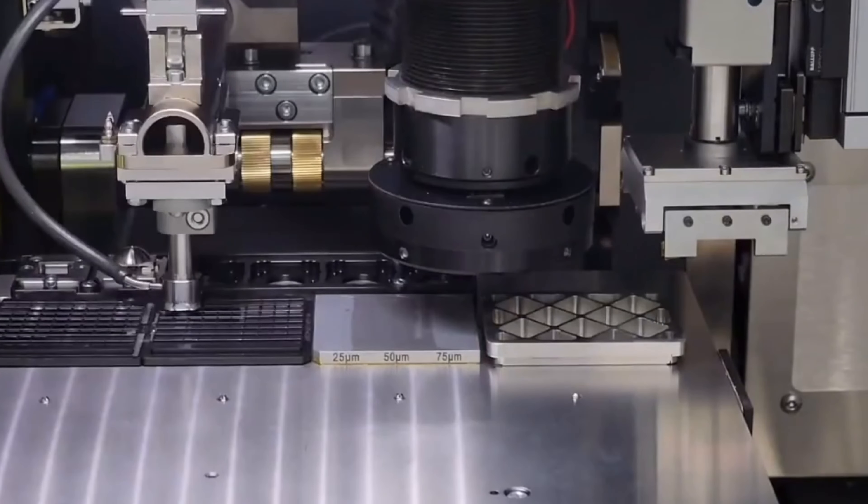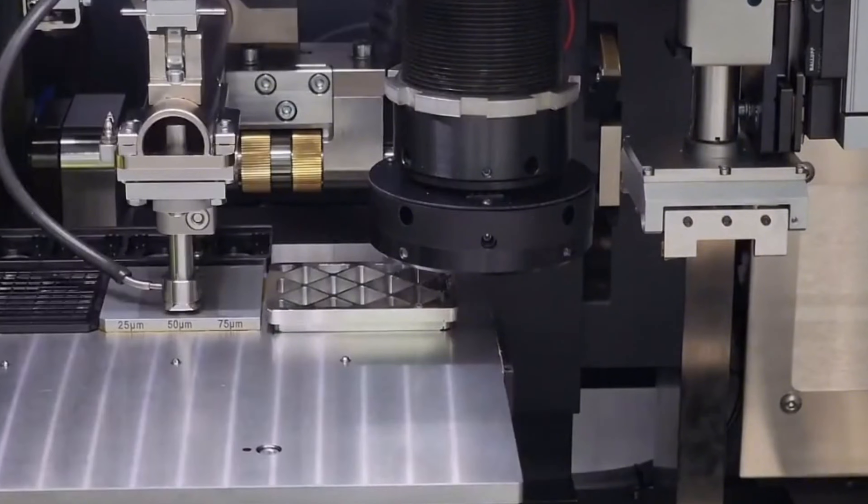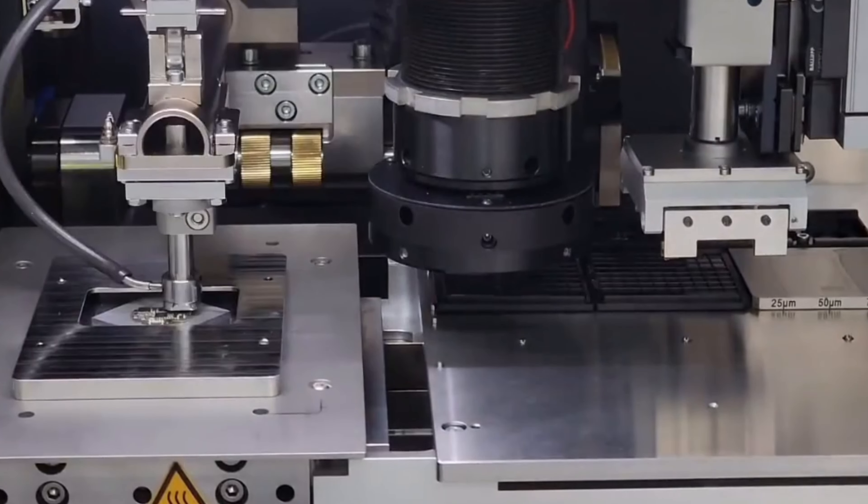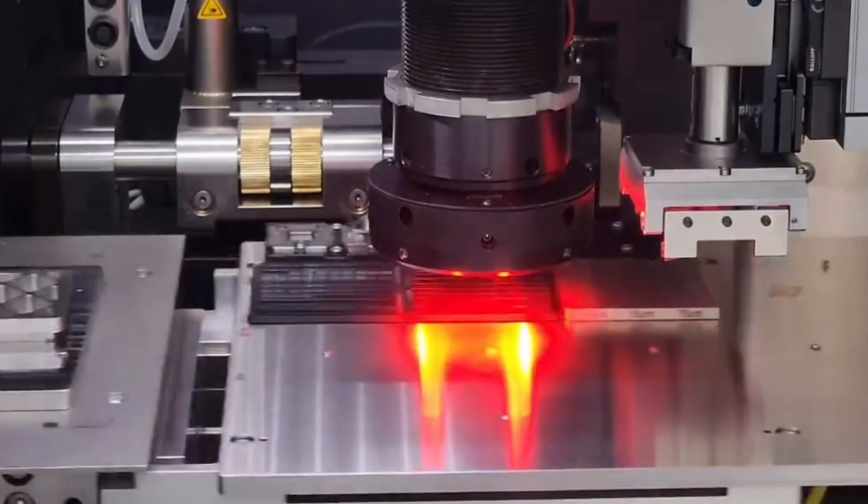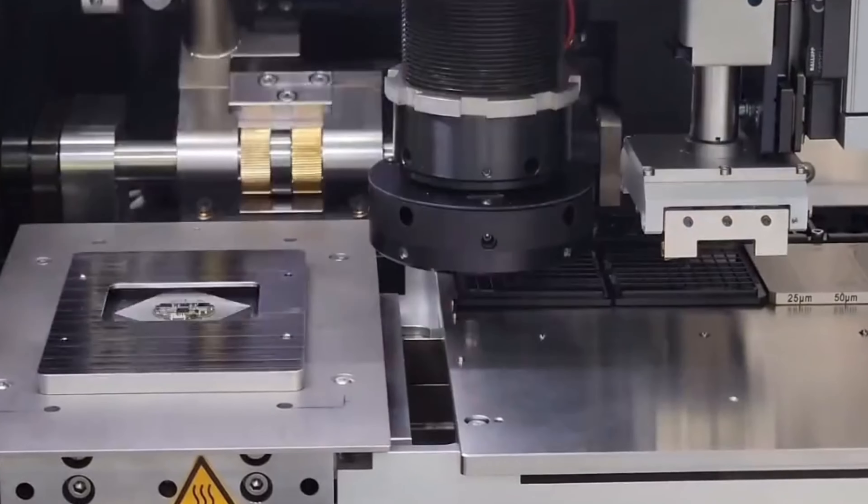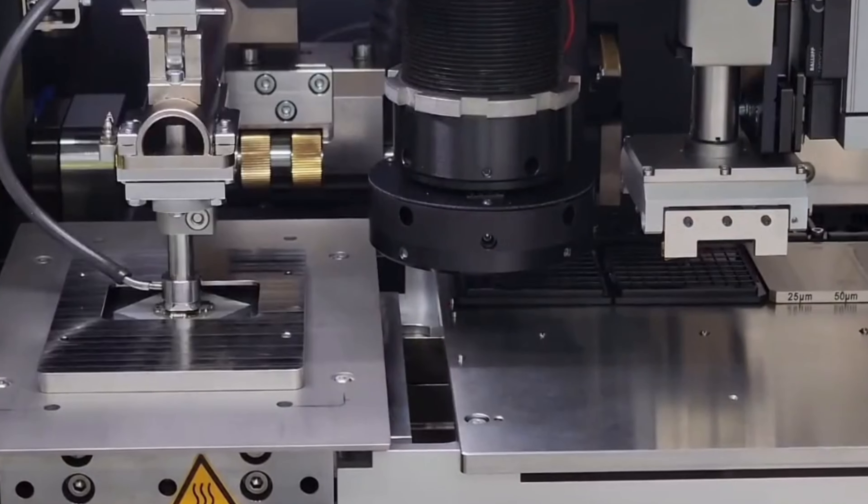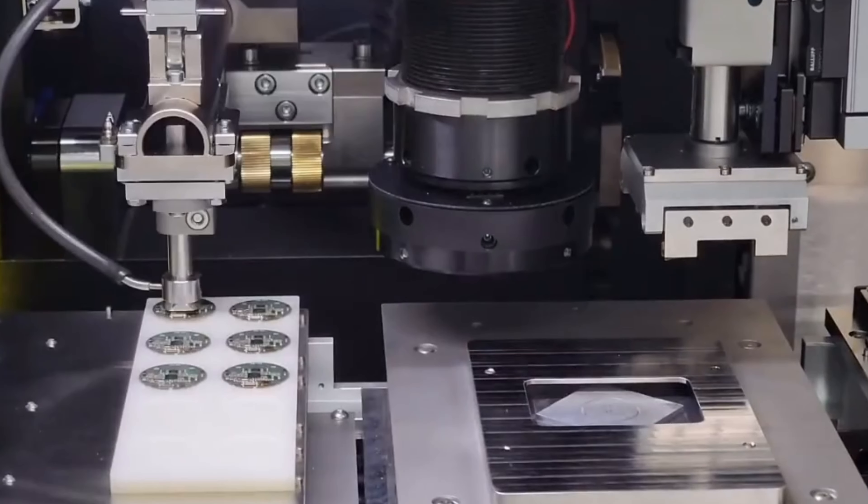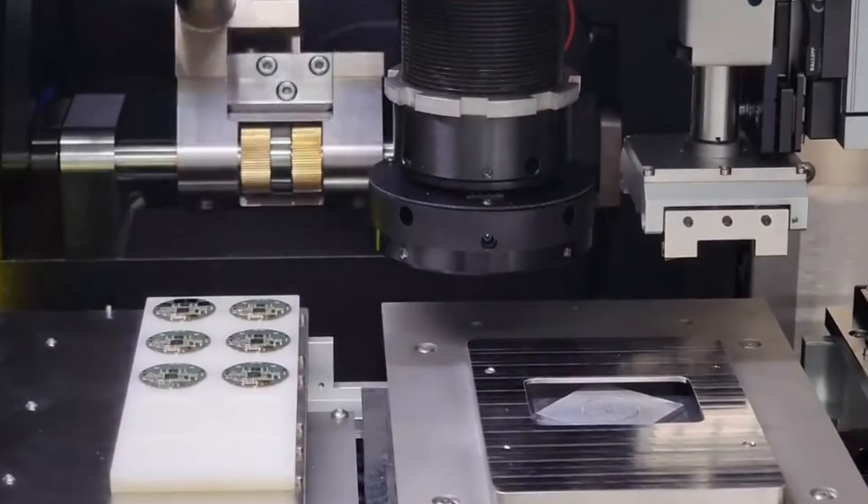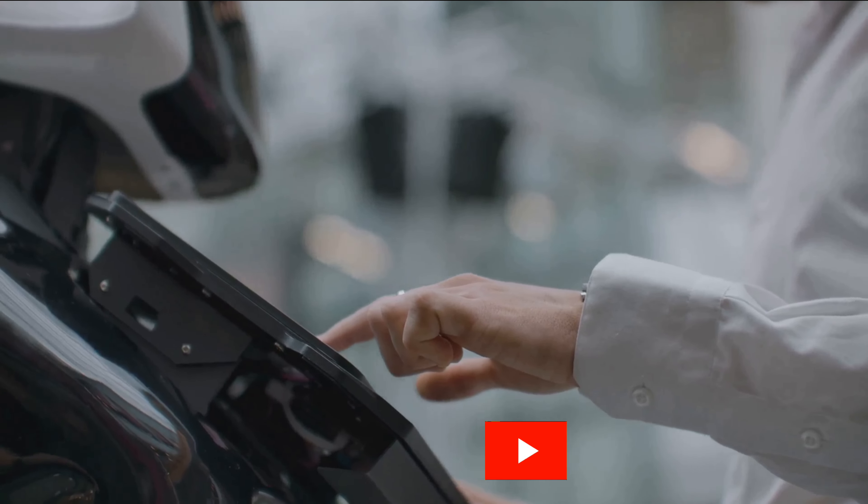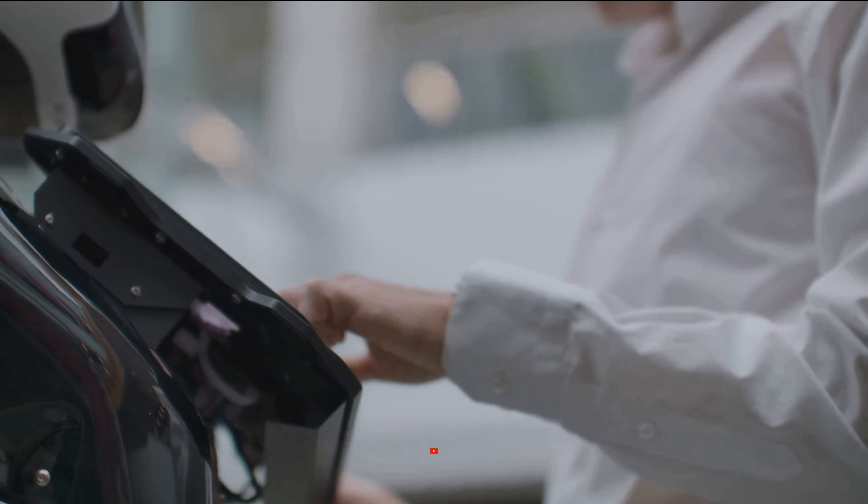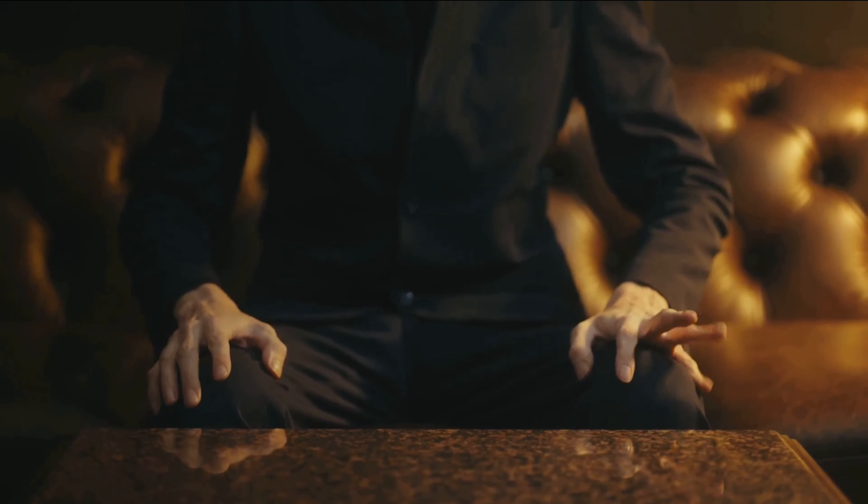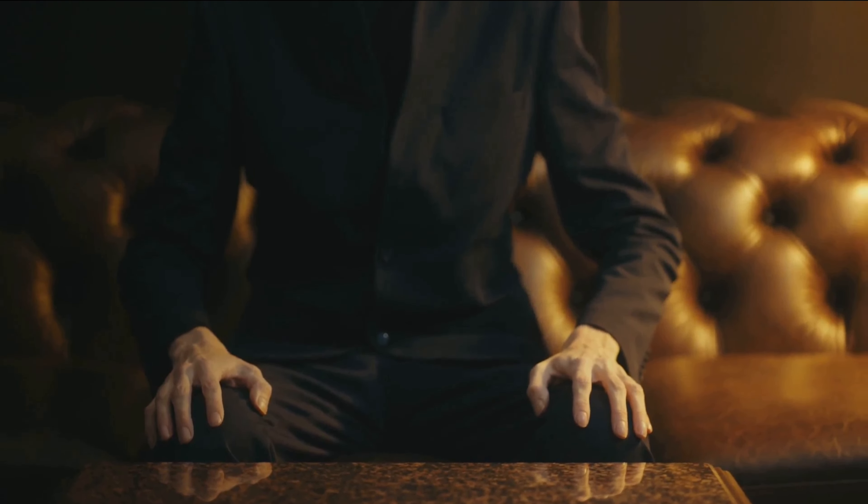Imagine a suit of armor, specifically designed for the Neuralink chip, providing it with the protection it needs while ensuring it can function optimally. This isn't just about protection, it's about creating a harmonious relationship between technology and biology. This enclosure is like the skin, protecting the device from the external environment while keeping it safe and biocompatible. It's a remarkable feat of engineering that showcases the intricate balance between technology and the human body.